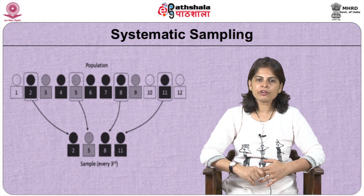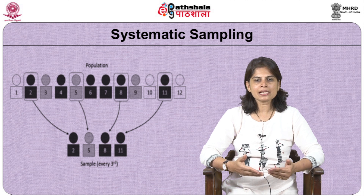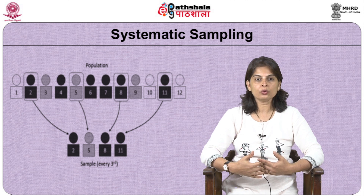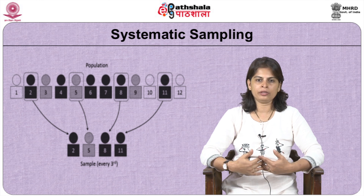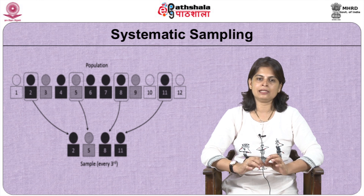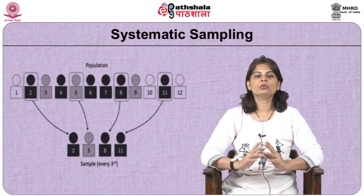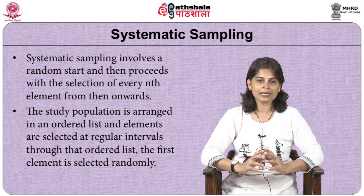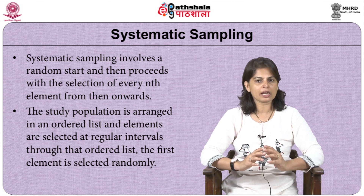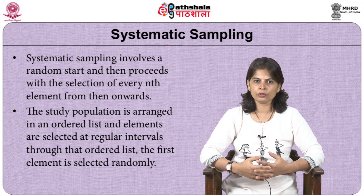Let us see what is systematic sampling. Systematic sampling is often used instead of random sampling. It refers to arranging the study population according to some ordered scheme, and then elements are selected at regular intervals — known as the sampling interval — through that ordered list. The starting point is not automatically the first in the list, but is instead randomly chosen from within the first to the nth element. Thus, systematic sampling involves a random start and then proceeds with the selection of every nth element from that unit onwards.